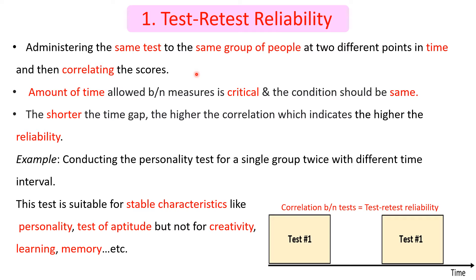We have to remember that the time interval between the two tests is very critical. For example, conducting a personality test for a single group twice with a different time interval — the correlation between the tests equals the test-retest reliability.